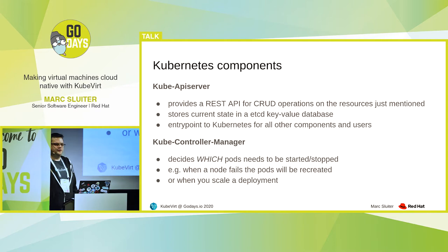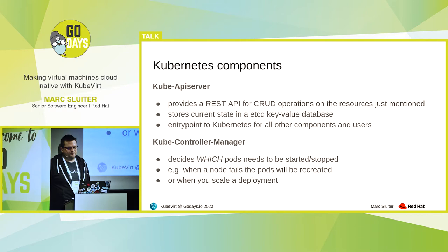So how is Kubernetes working? There are several components running in your cluster. The first one is the Kube API server. That one provides a REST API for create, read, update, delete operations on the resources. It stores the current state of the cluster in an etcd key-value database. And it's basically the entry point for all other components and for users to your Kubernetes cluster.